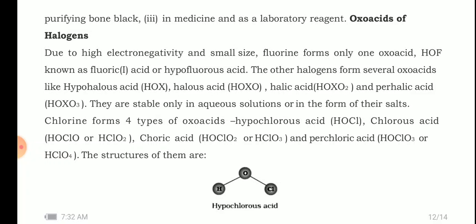The other halogens form several oxo acids: hypohalous acid, halous acid, halic acid, and perhalic acid. They are stable only in aqueous solutions or in the form of their salts. Chlorine forms four types of oxo acids, which is important: hypochlorous acid HOCl, chlorous acid HClO₂, chloric acid HClO₃, and perchloric acid HClO₄.